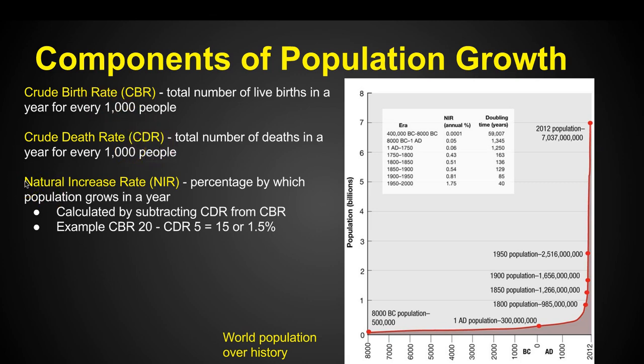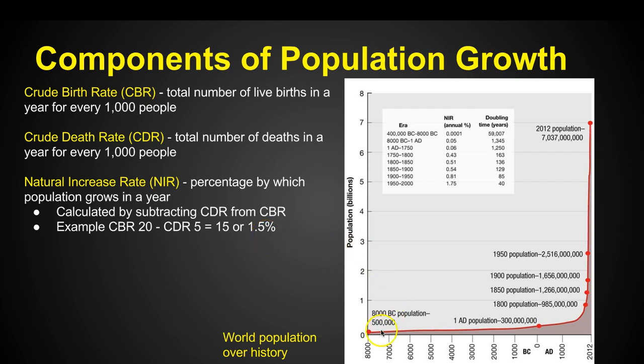The natural increase rate, or the NIR, is the percentage by which the population grows in a year. We calculate that by subtracting the death rate from the birth rate. For example, if our CBR is 20 and our CDR is 5, we've got an NIR of 15 — the percentage breakdown would be 1.5%. Looking at our population over history...